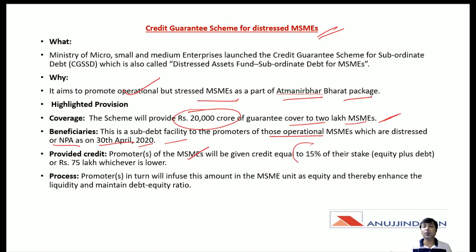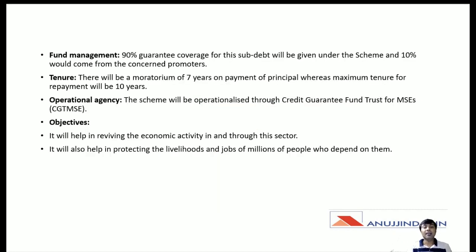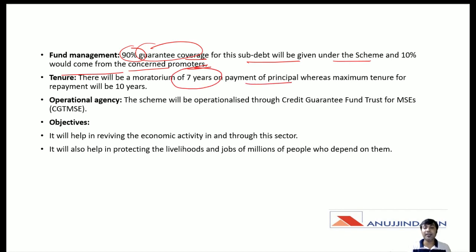The promoters of MSMEs will be given credit equal to 15% of their stake or rupees 75 lakh, whichever is lower. Promoters in turn will infuse this amount in the MSME unit as equity to enhance liquidity and maintain the debt equity ratio. The 90% guarantee coverage for this debt will be given under the scheme and 10% would come from the concerned promoter. The moratorium period is 7 years on payment of principal, with a maximum repayment period of 10 years.